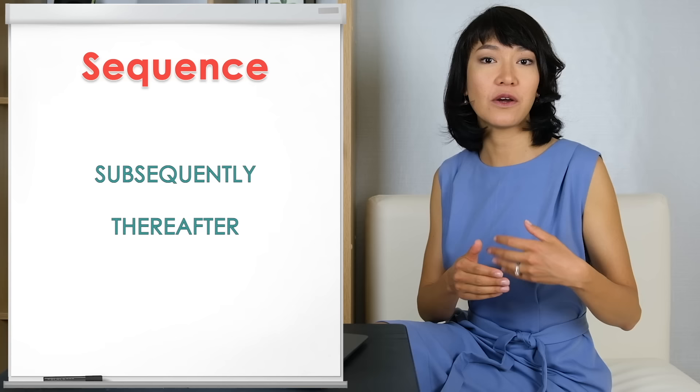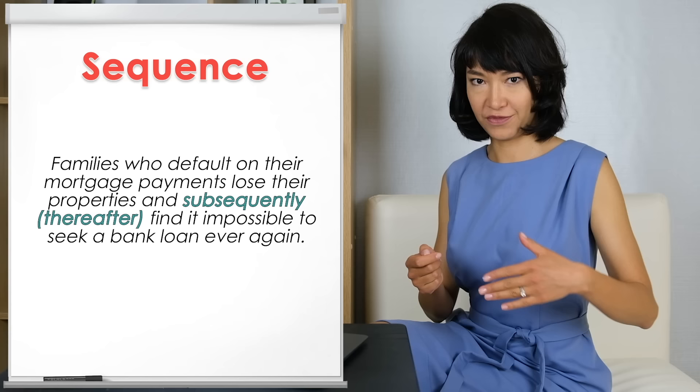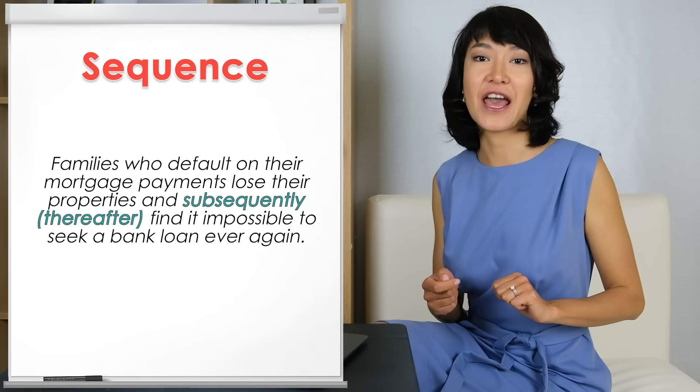Let's go on to another type of linking word — words that show sequence in time or in a process. You know words like first, then, after, finally, and expressions such as 'in the first place' or 'first of all.' But what about SUBSEQUENTLY and THEREAFTER? Both can replace the words 'after' or 'then.' For example: 'Families who default on their mortgage payments lose their properties and subsequently — or thereafter — find it impossible to seek a bank loan ever again.'